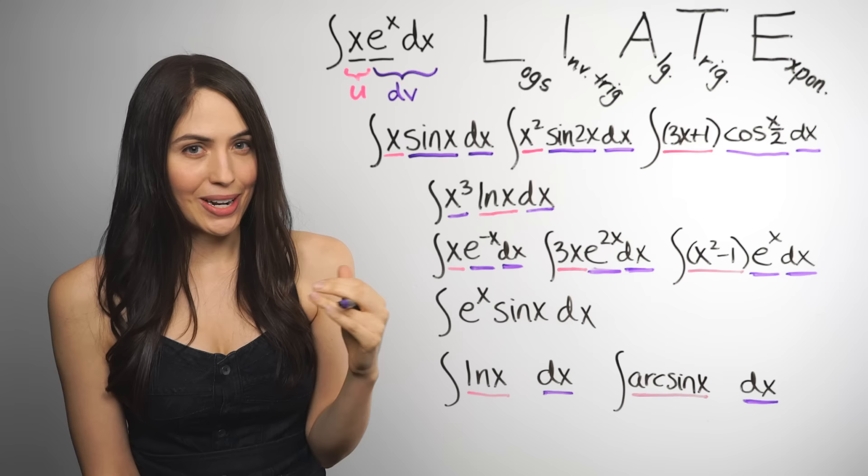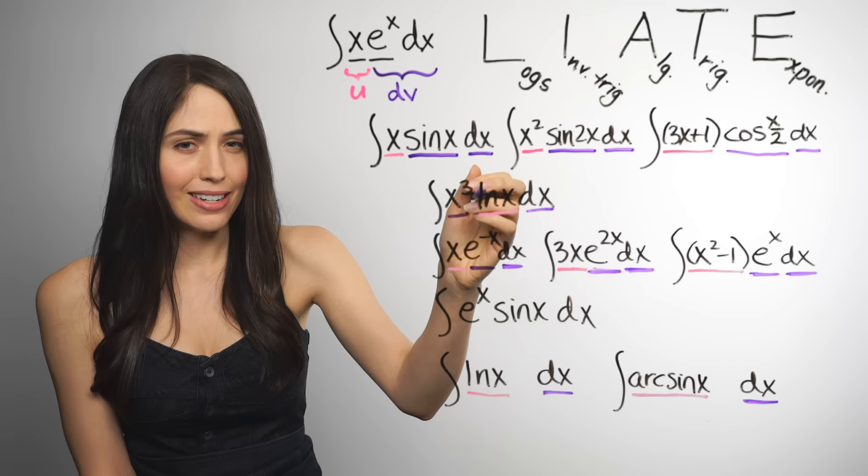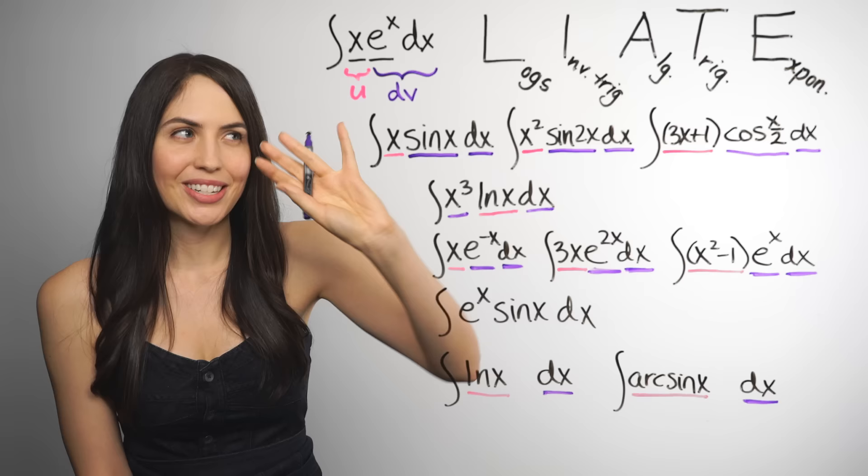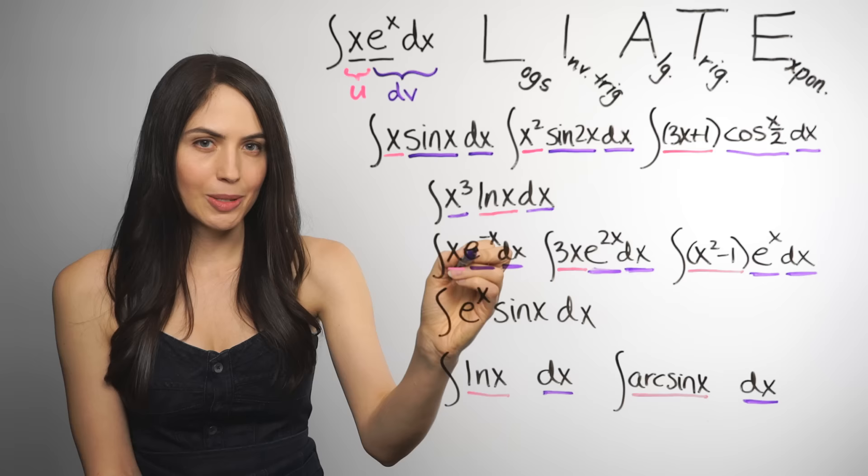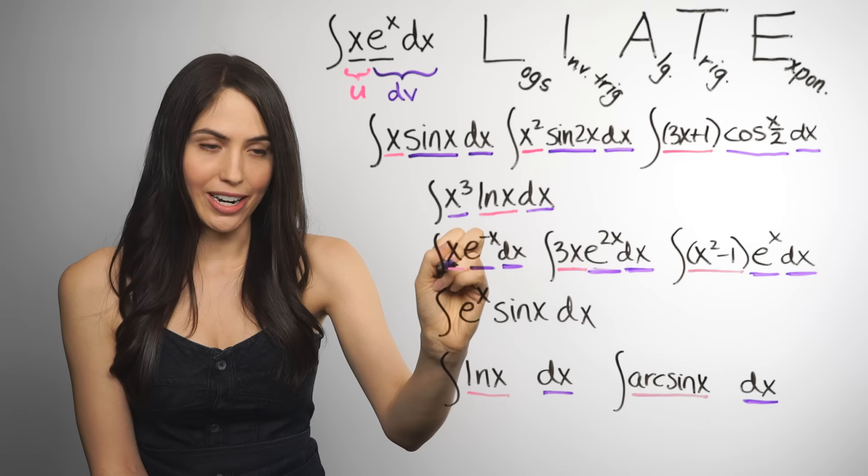This also goes back to what I was saying. You don't want something to be dv if it's going to get more complicated when you integrate it. And lnx definitely does get more complicated, more terms when you integrate it. But you can stick to the trick as well. What about this form? We have algebraic and exponential in all of these. Algebraic and exponential. Well, since we have A and E, A wins out. And all of those algebraics are the u's. And the rest is the dv's.